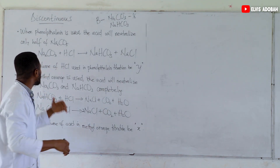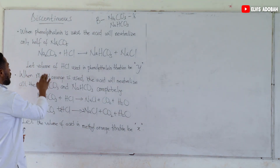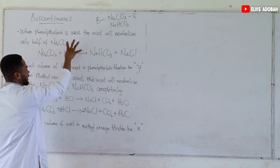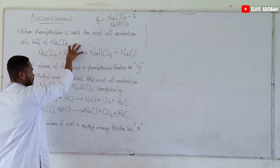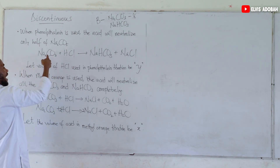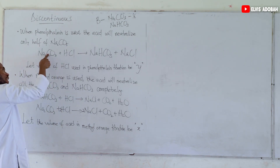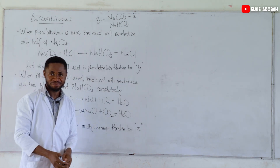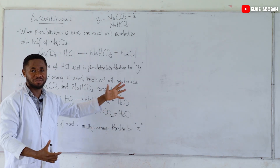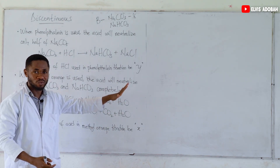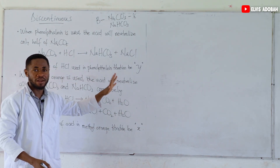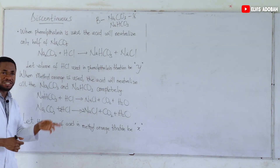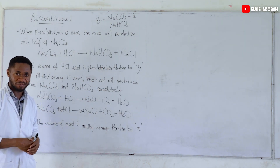So this sodium bicarbonate will add to the already existing sodium bicarbonate present, and they will all be left unconverted or not neutralized. Let's assume the volume of HCl required in the phenolphthalein titration to neutralize half of only the sodium carbonate to be Y. Let's keep that and come back to it very soon.